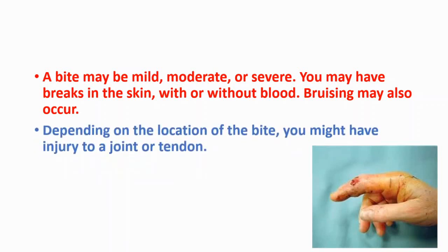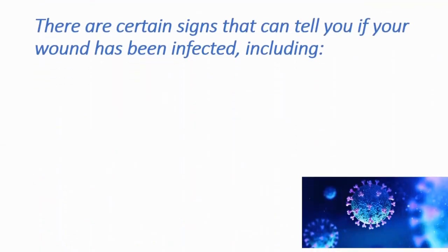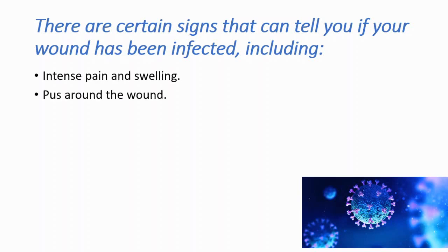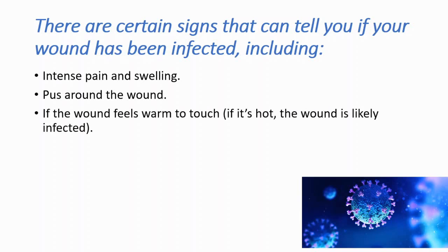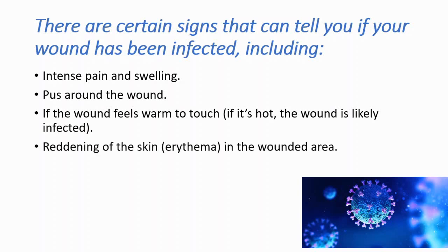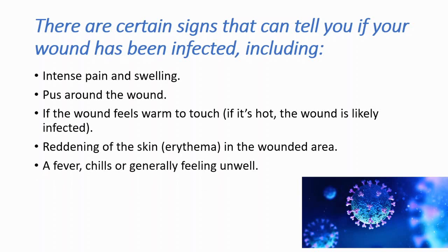Depending on the location of the bite, you might have injury to a joint or tendon. There are certain signs that can tell you if your wound has been infected. Those signs are intense pain and swelling, pus around the wound, if the wound feels warm or hot to touch the wound is likely infected, reddening of the skin — also known as erythema — in the wounded area, and fever, chills, or generally feeling unwell. Those are the common signs of infection.